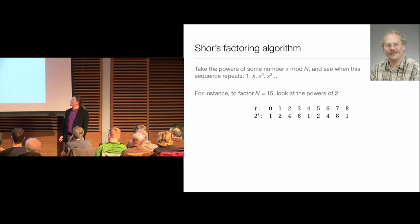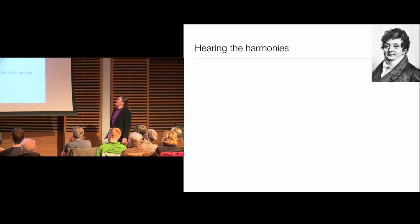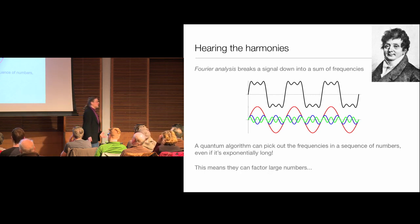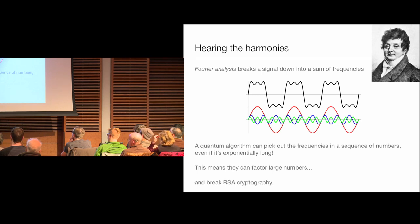Given that sequence, a quantum computer can quickly and easily find its frequency — its periodicity. That's the heart of the algorithm. This shows that quantum computers can find periodicity in this sequence of powers, which means they can factor large numbers, which means they can break RSA. That's why a number of government agencies started funding lots of work in quantum computing shortly after the discovery of Shor's algorithm.